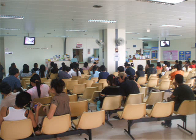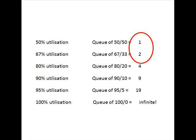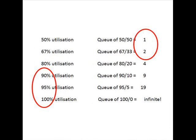Customers want the queue to be only 1 or 2, but they don't always want to pay for utilization being 50% or 67%, because there's an extra cost there. Bosses want utilization to be 90% or 95% — the most efficient use of resources — but they probably don't want their customers to be unhappy with queues of 10 to 20 people. So there's always this dilemma of whether you should have spare resources, and probably 80% is about the right mixture for most things.